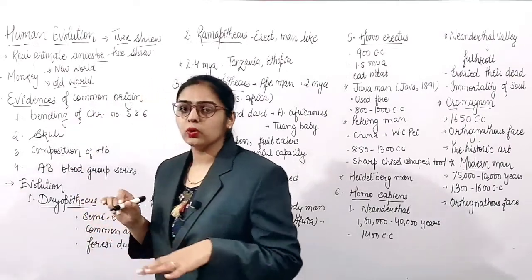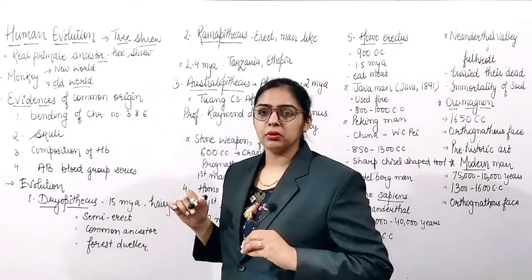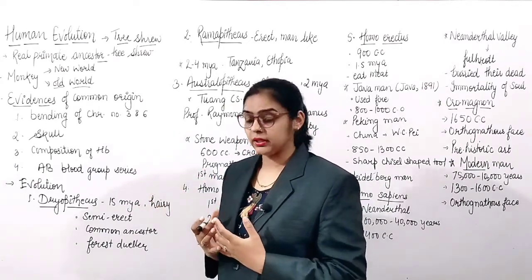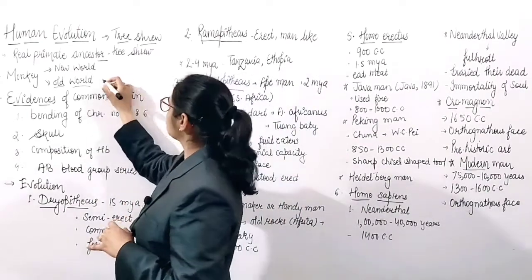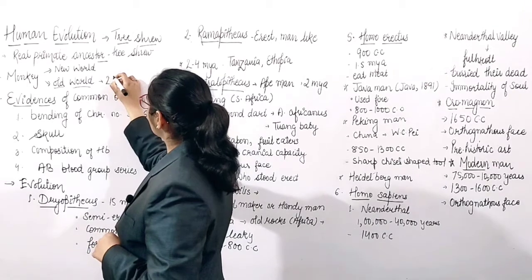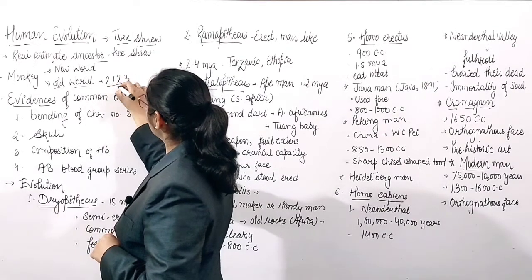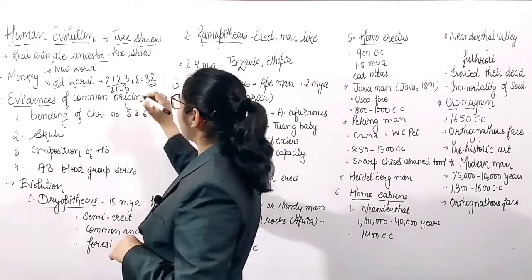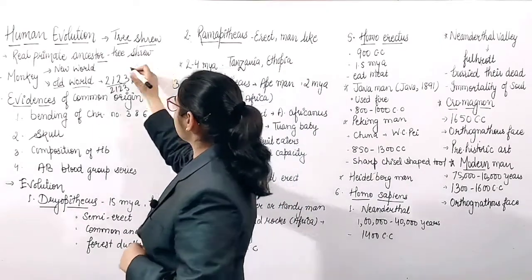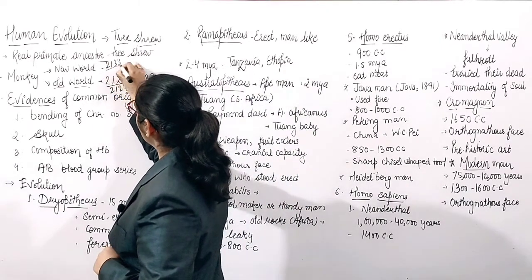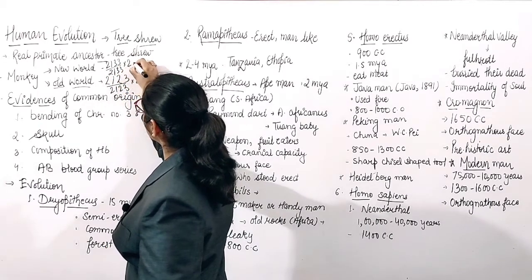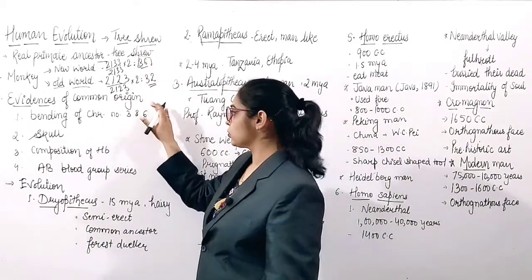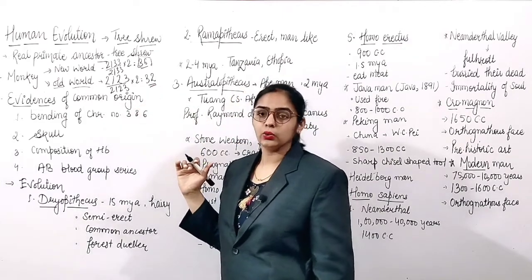There are two types of monkeys: new world and old world. If we talk about teeth, the old world monkey has a dental formula of 2123/2123 × 2 = 32 teeth. The new world monkey has 2133/2133 × 2 = 36 teeth. So the new world monkey has 36 teeth and the old world monkey has 32 teeth.